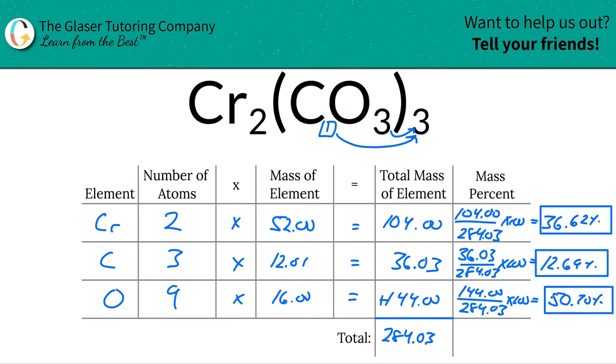And considering the rounding, this should add up to 100. If you added those exact answers up, it should add up to 100. If you add these rounded values, you can already tell it's probably going to be off by maybe 0.01.